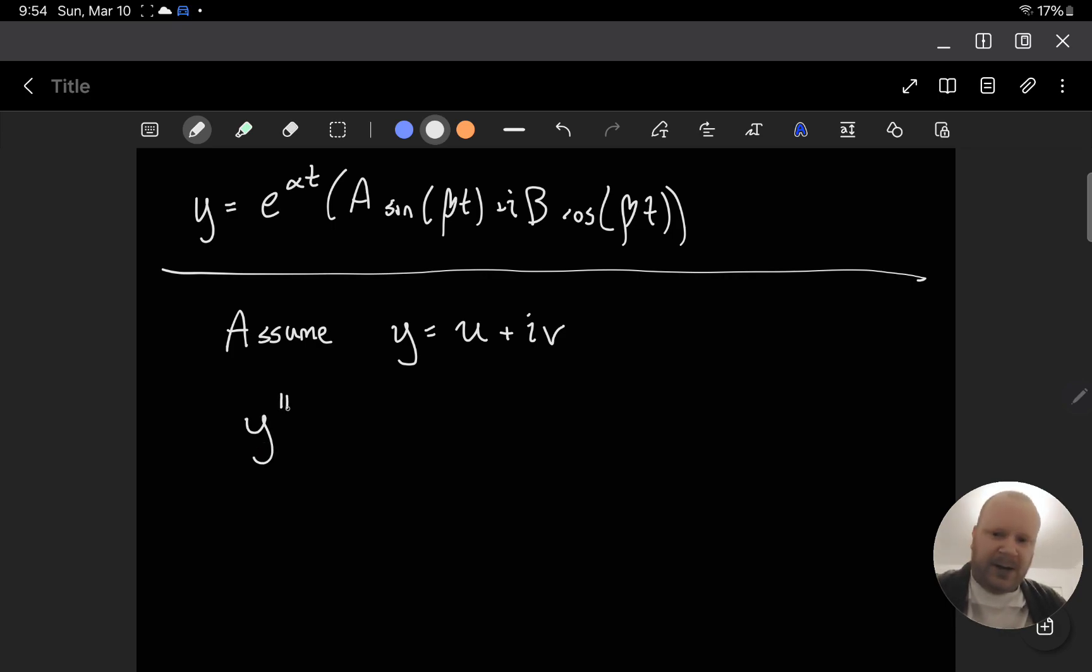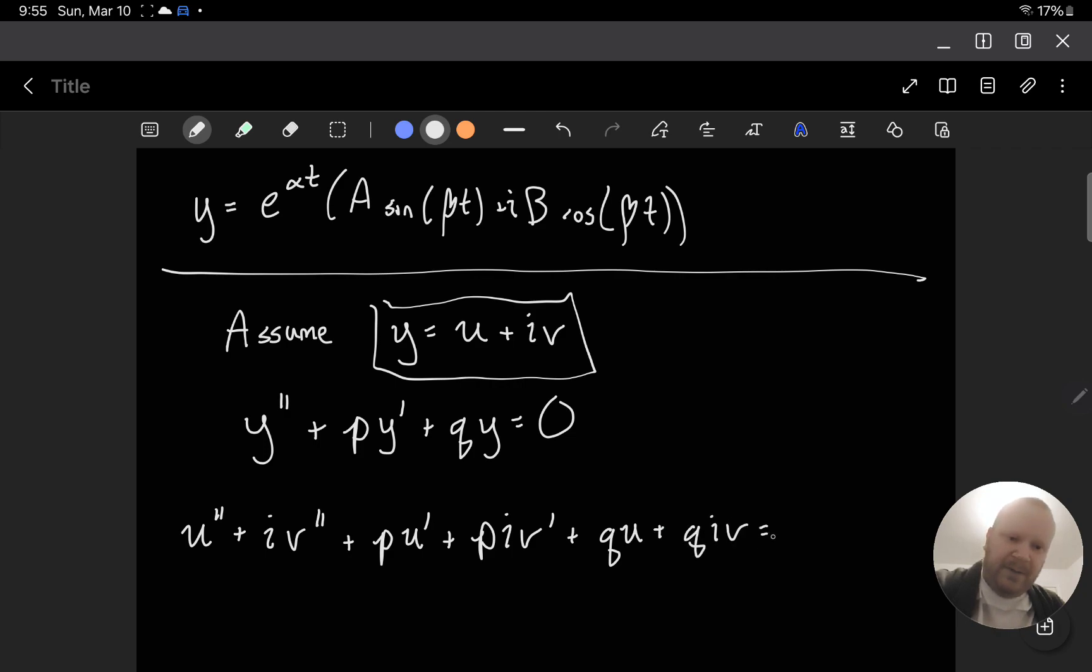So, if we look at the kind of second-order differential equations that we've been looking at, where we have some function out in front of y double prime, or sorry, y single prime, and some other function q out in front of y, and I always assume they're homogeneous for now, we can just take this solution version of it, and this will give us u double prime plus i times v double prime plus p times u prime plus p times v prime plus q u plus q i v is equal to zero.